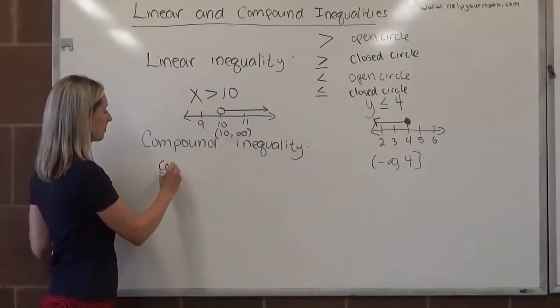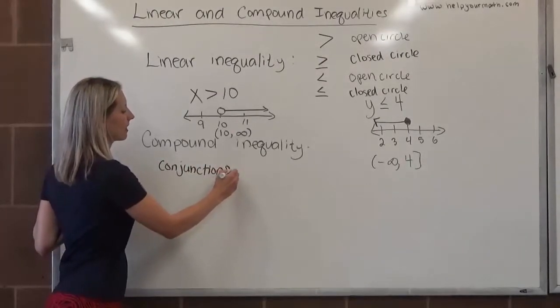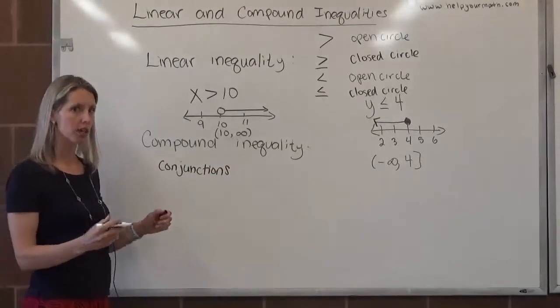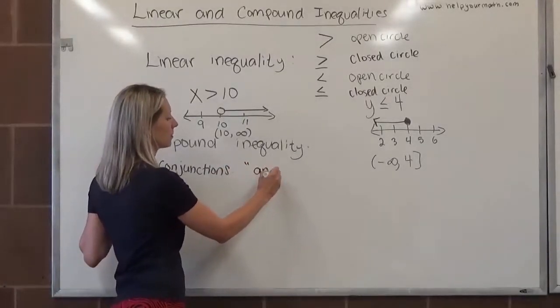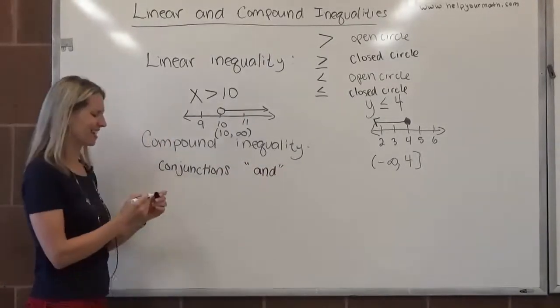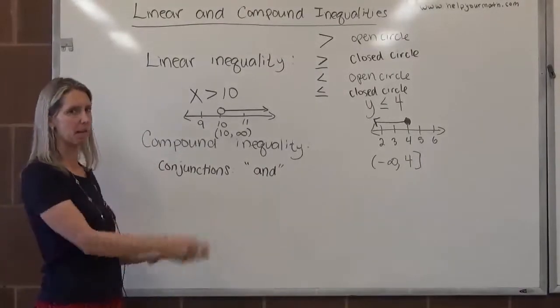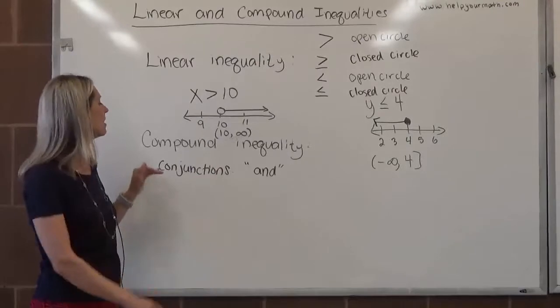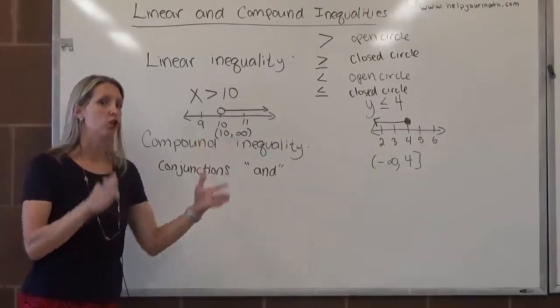The two types of compound inequalities: we have conjunctions. If you've ever taken a set theory class, then you might know conjunctions are associated with the word and. There is also set theory notation, but for and, it's not really relevant to what we're doing. We don't necessarily need to know it, so I'm going to bypass that, but just know it exists.